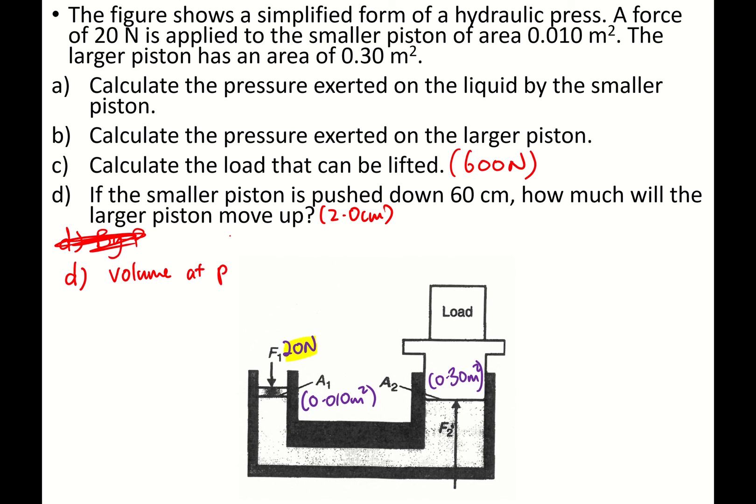Volume at small piston equals volume at large piston. So volume at small piston, you have 0.01 times 60 cm equals volume at large piston, which is 0.3 times D₂. So D₂ equals 2.0 cm.